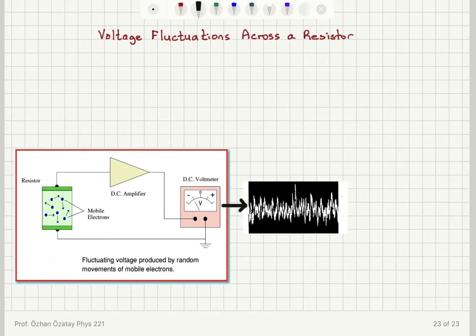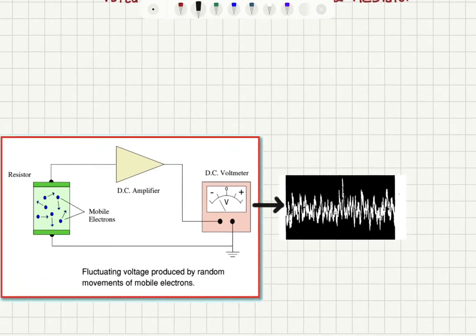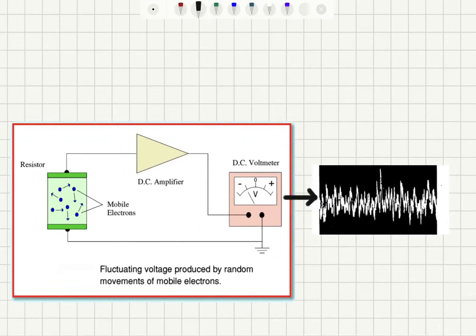A good way to measure this is to connect it to an amplifier. By looking at the reading in the voltmeter, we can see that there will be fluctuations around zero.